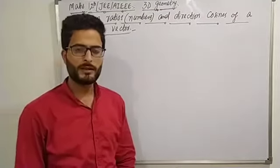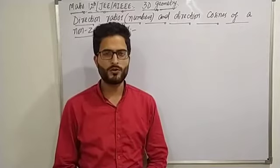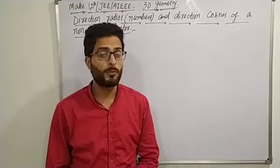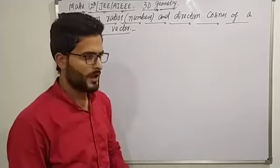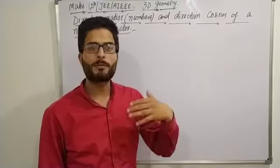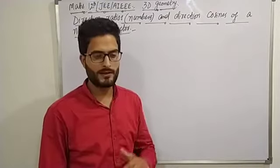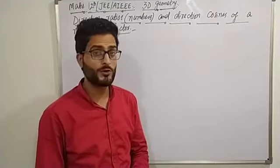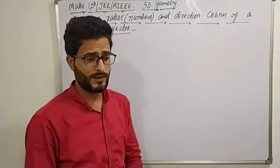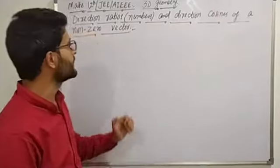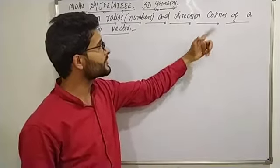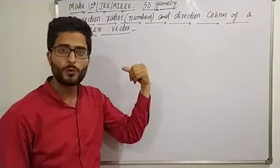Assalamu alaikum dear students. In the previous class we discussed the section formula, distance formula, and midpoint formula regarding three-dimensional geometry. We deduced these three concepts in the previous class. Now this class will start with a new article — direction ratios or direction numbers, and direction cosines of a non-zero vector.